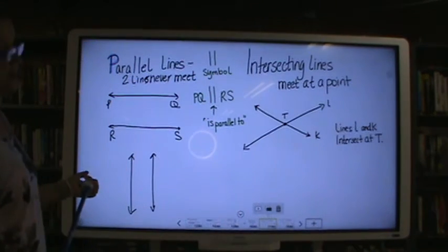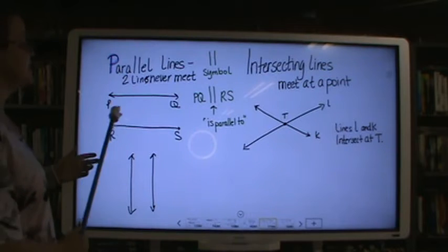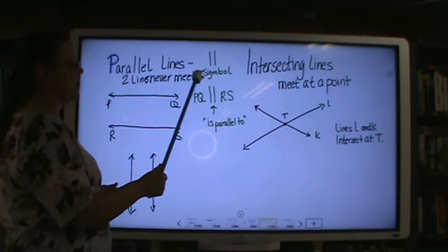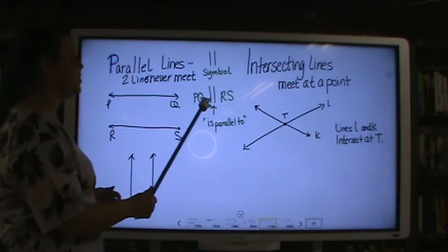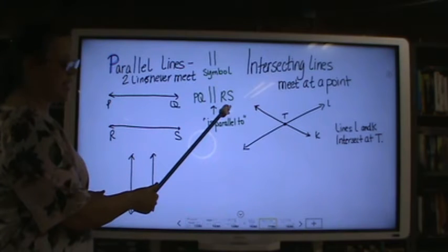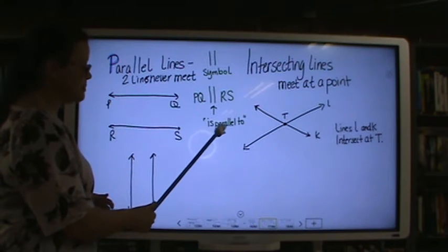The next thing up is parallel lines. Parallel lines have a symbol of two lines that go up and down with one another. That's the symbol. PQ is parallel to RS. And that's what that means, is parallel to.